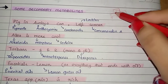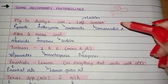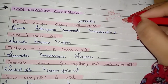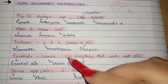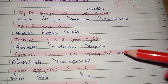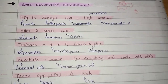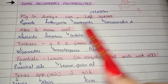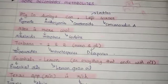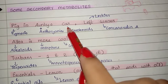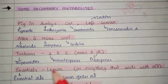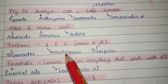Continuing the story: 'Alka is more cool' — there is a girl named Alka in the car who looks very cool. Alka for alkaloids, more for morphine, cool for codeine. Then turbans — one and two turbaned uncles in the car. Turban for terpenoids, one and two for mono and di — monoterpenes and diterpenes. Then essentials lemon — when we travel, lemon is essential to prevent vomiting. Essentials for essential oils, lemon for lemongrass oil. Everything ending with 'oil' comes under essential oils.